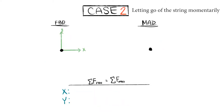Case 2: letting go of the string momentarily. Free body diagram — treat all forces as if they act on the center of mass. Three forces are present on the free body diagram: 1. Weight of the kite, pointing straight down, negative vertical. 2. Drag force, pointing towards the tail, positive horizontal. 3. Lift force, pointing straight up, positive vertical.